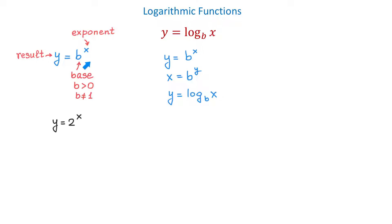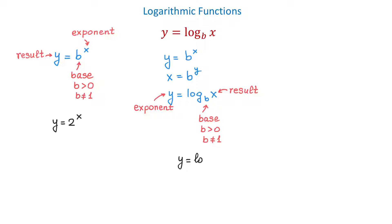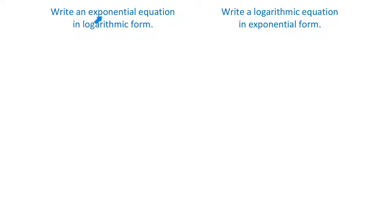In this logarithmic function, just like in the exponential function, b represents the base, and the base has to be positive and not equal to 1. Then y represents the exponent, and x represents the result. An example of a logarithmic function is y equals log base 2 of x. In this function, 2 is the base, x is the result, and y is the exponent. So a logarithmic function is the exponent to which the base b must be raised to obtain the result x. To find a logarithm means to find an exponent. We can take an exponential equation and write it in logarithmic form, and vice versa.